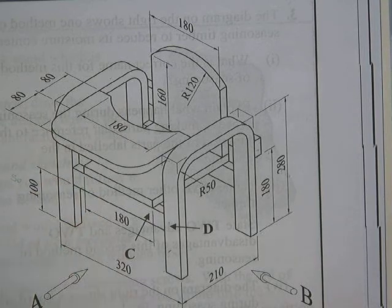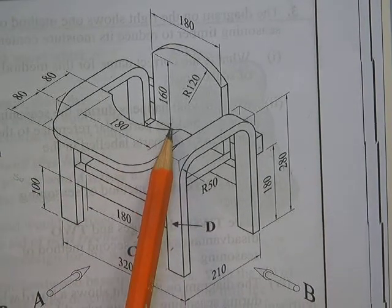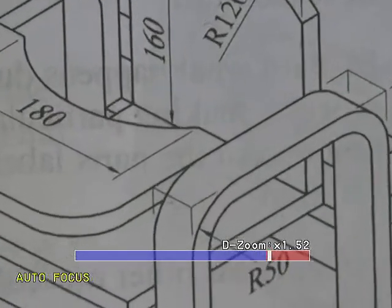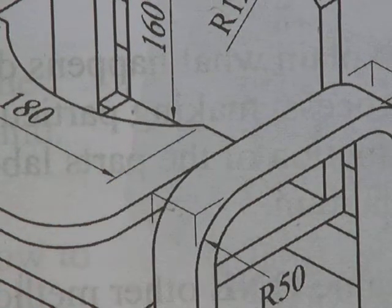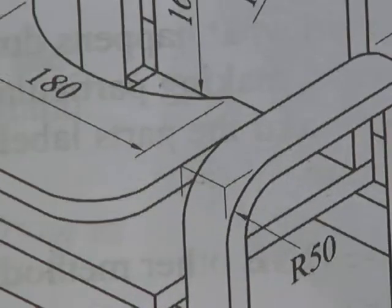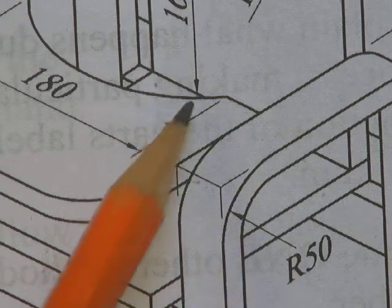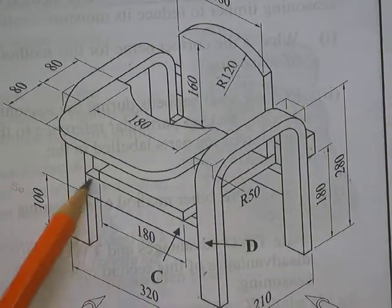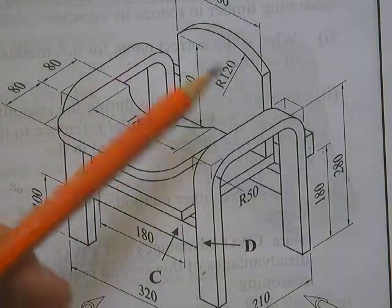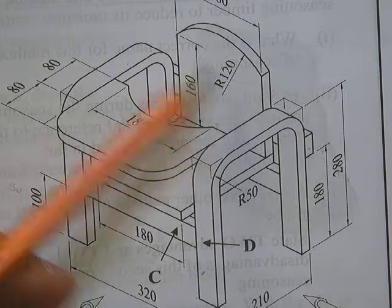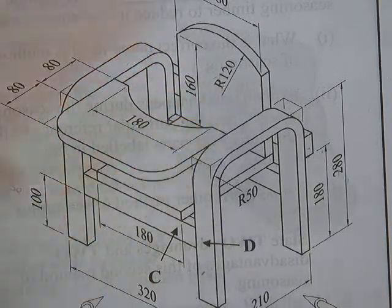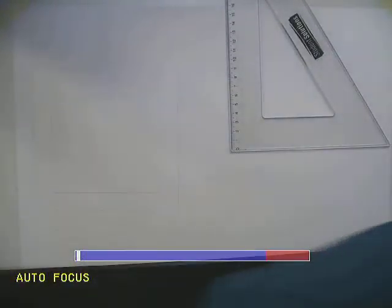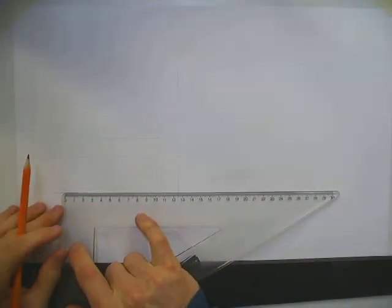We also look at the height of the lines at 160 — that's simply up 80 from the top. Notice where the arrow points to: the top of the seat. So we have two measurements: 160 and 180. From the centre line, we go 45 each side and then up 80. There's also a radius of 120, which at scale becomes radius 60.